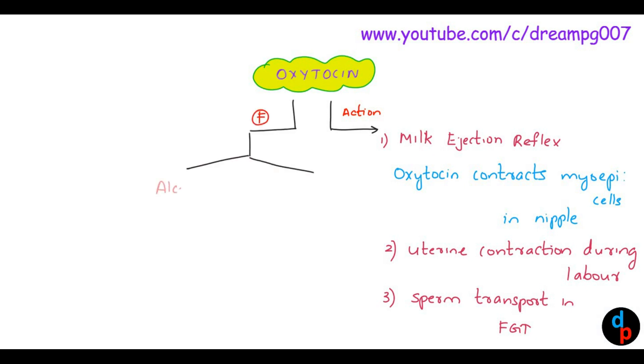Alcohol inhibits the synthesis of oxytocin, whereas emotions and genital stimulations increase the synthesis of oxytocin.